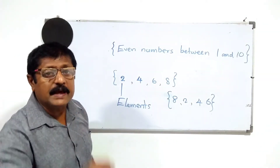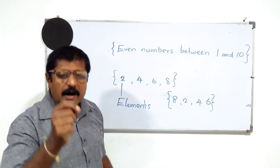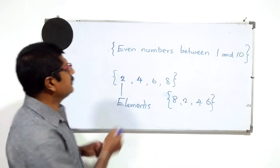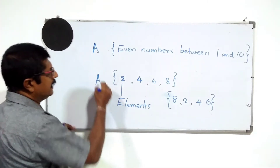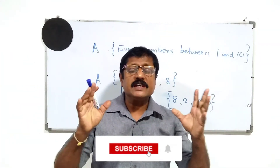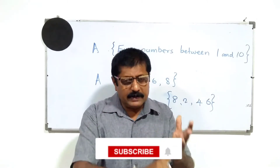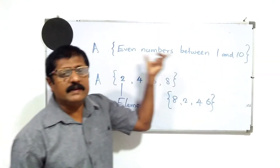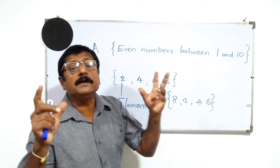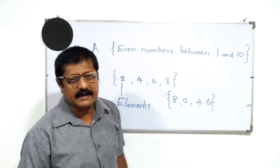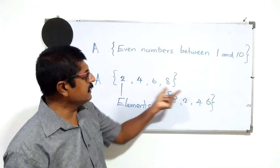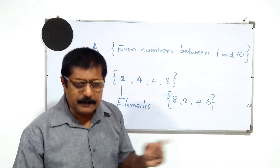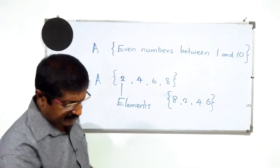Now, how do you name a set? The name you give must be an English capital letter — like A, B, and so on. So the name must be an English capital letter. You can describe the set within curly brackets using a common property, or you can write the elements of the set within curly brackets.